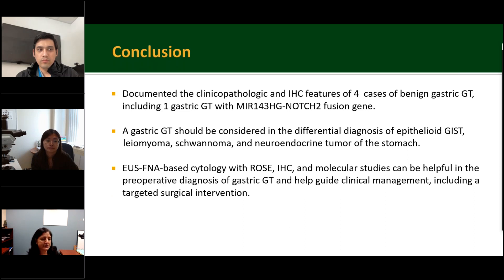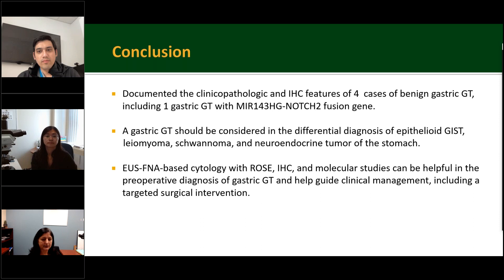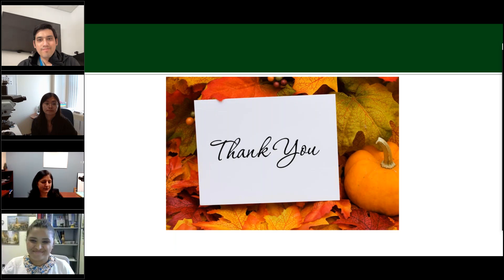In conclusion, the authors have documented the clinicopathological and immunohistochemical features of four cases of benign gastric glomus tumor, including one case with MIR-143-NOTCH2 fusion gene. Gastric glomus tumors should be considered in the differential diagnosis of epithelioid lesions, leiomyoma, schwannomas, and neuroendocrine tumors of the stomach. EUS FNA-based cytology with ROSE, immunohistochemical stains, and molecular studies can be helpful in preoperative diagnosis and can help guide clinical management, including targeted surgical intervention. I will conclude here and thank you all for your kind attention. Whoever has not visited New York — please come and visit us this fall season.